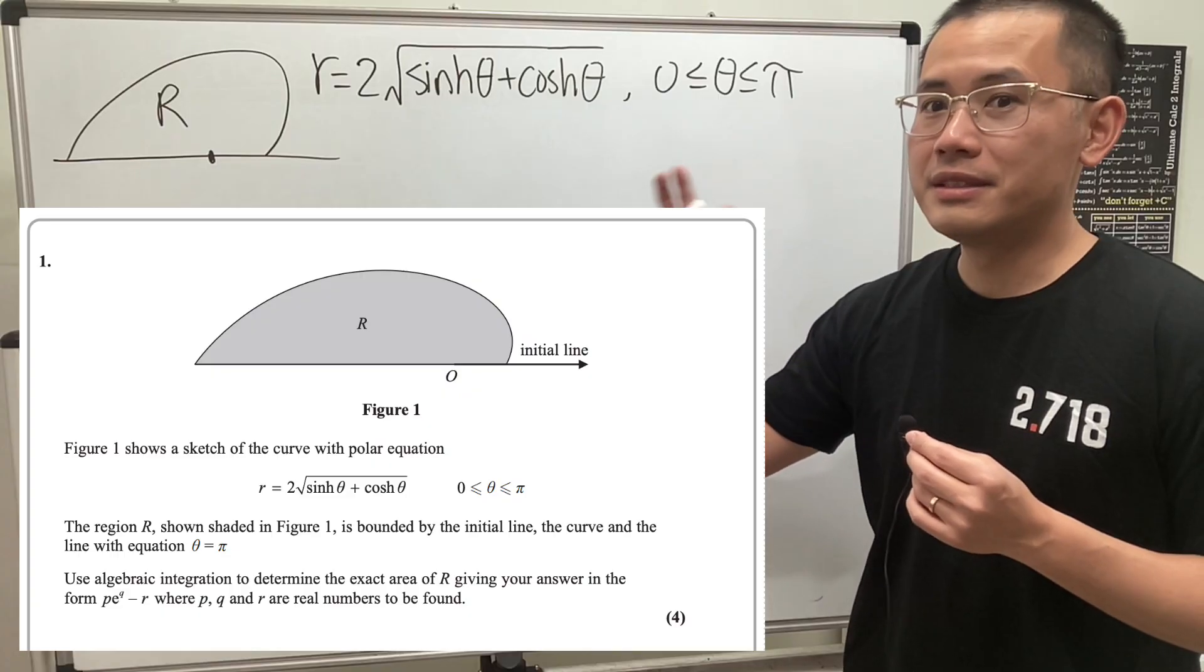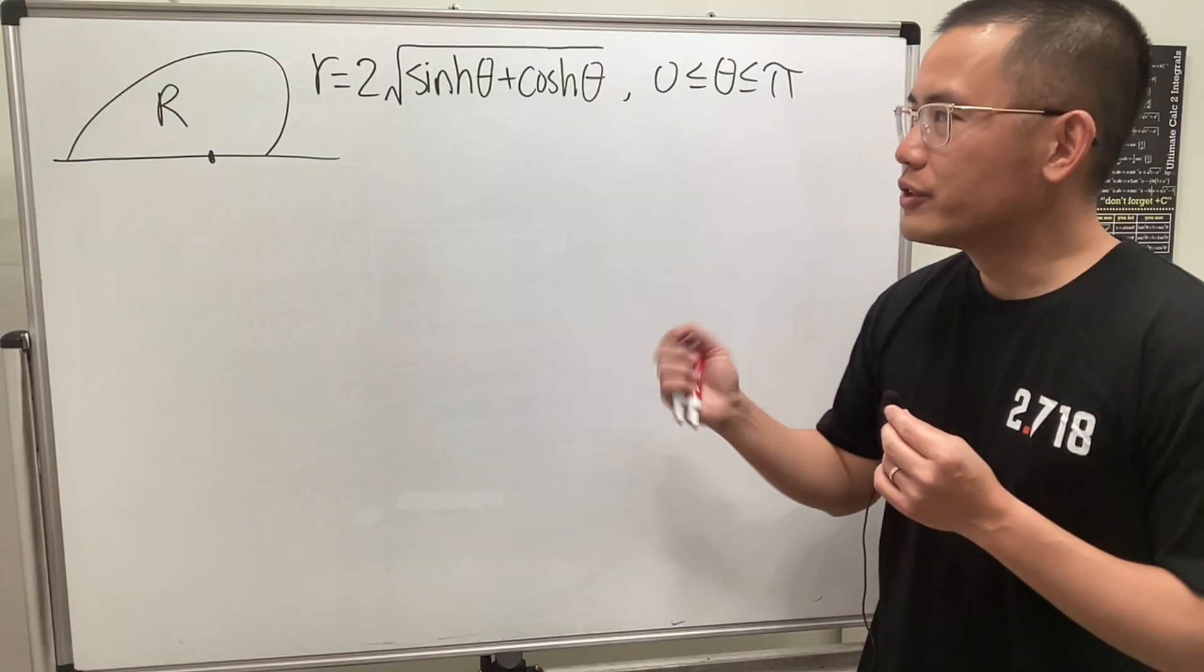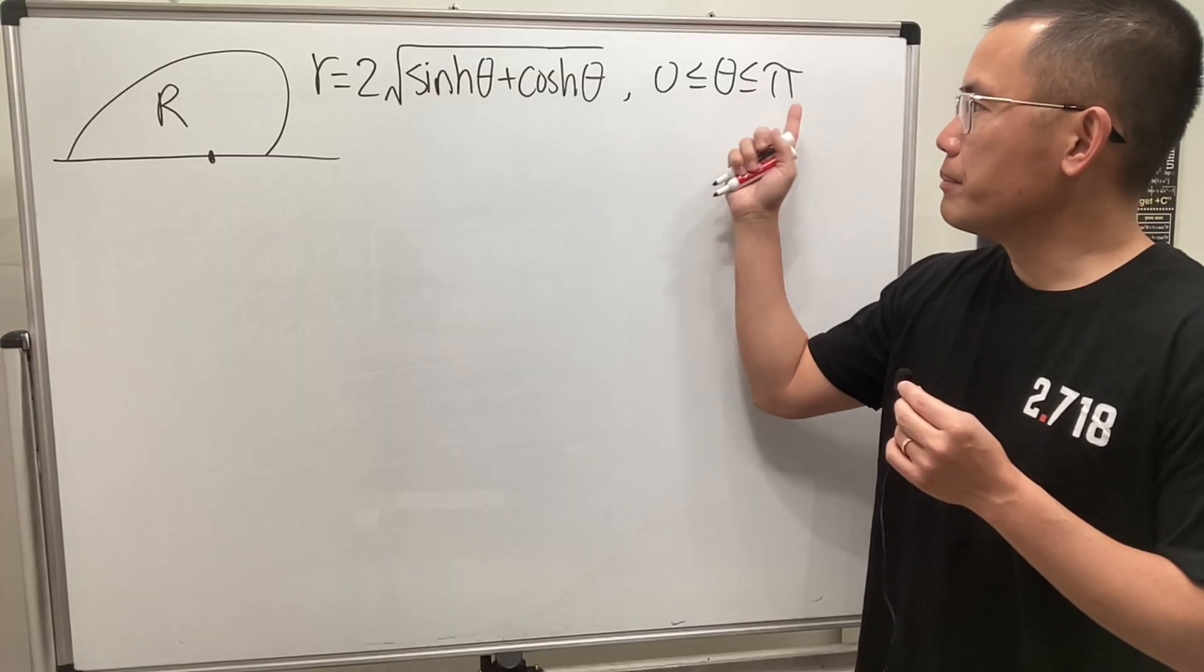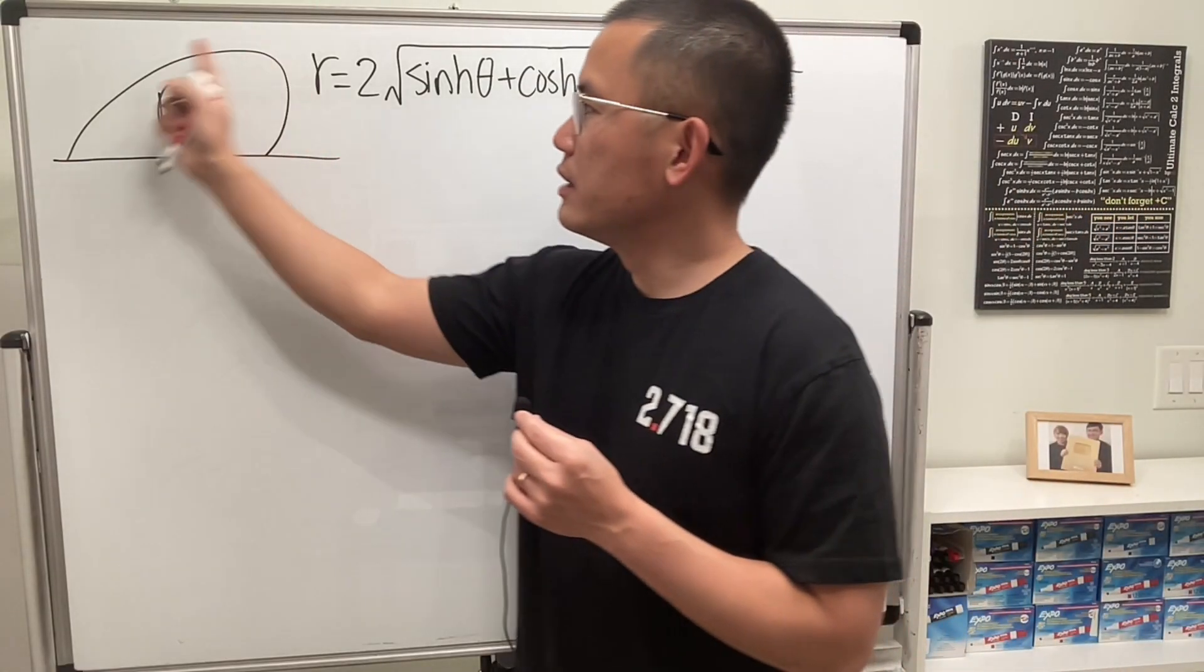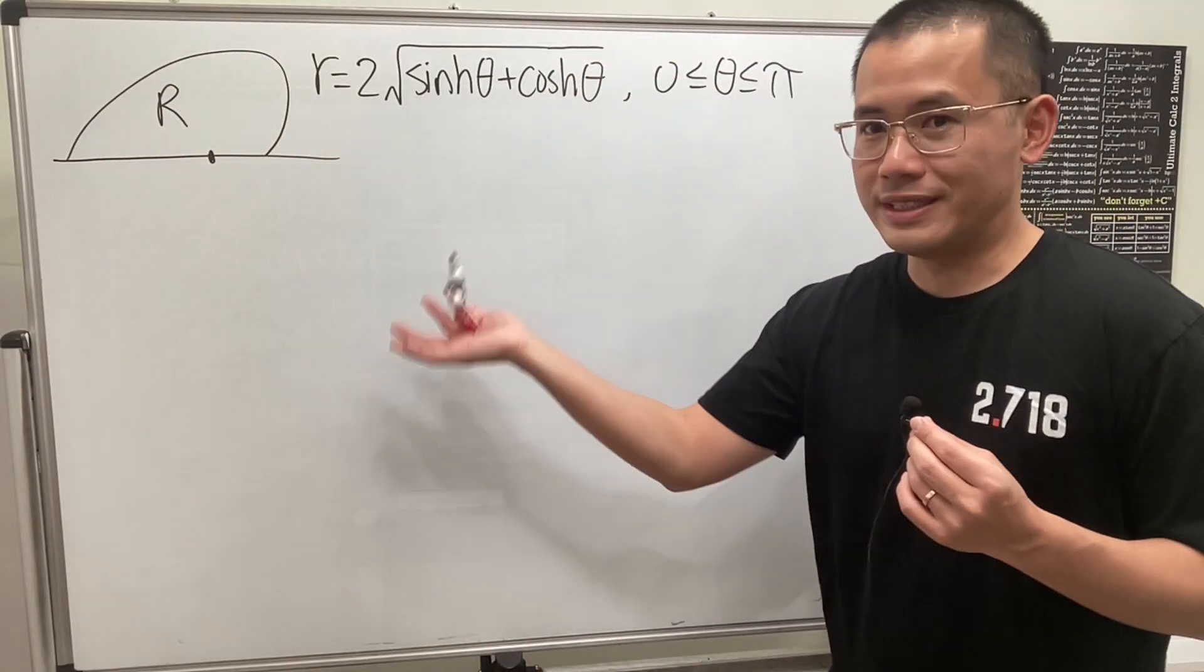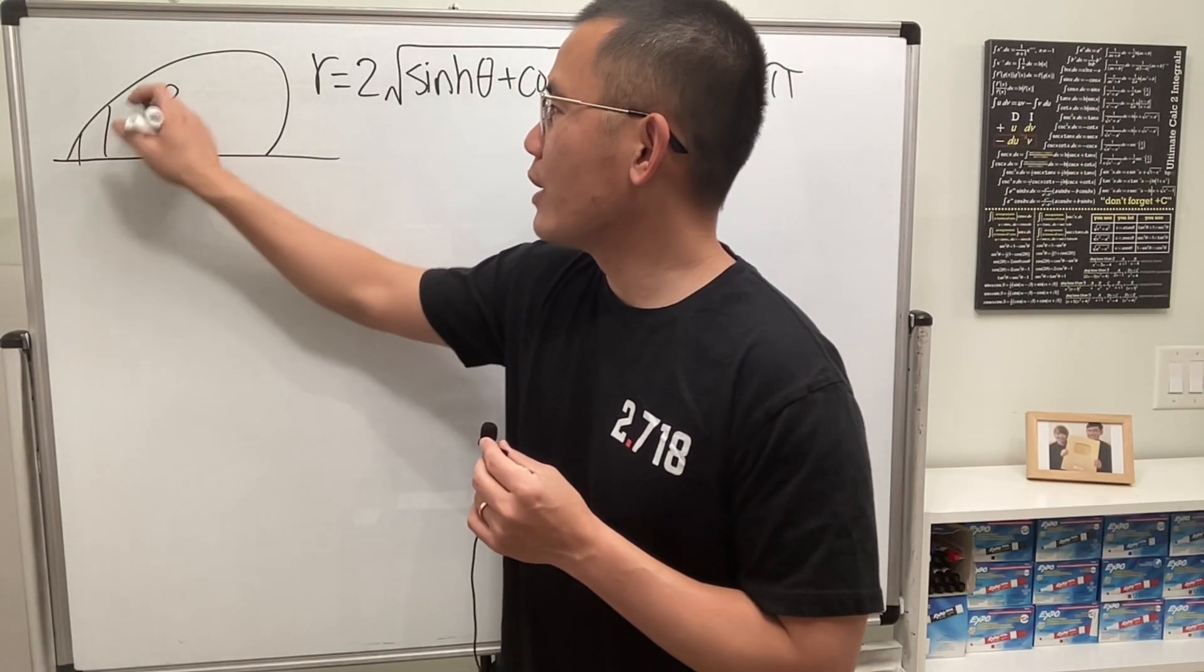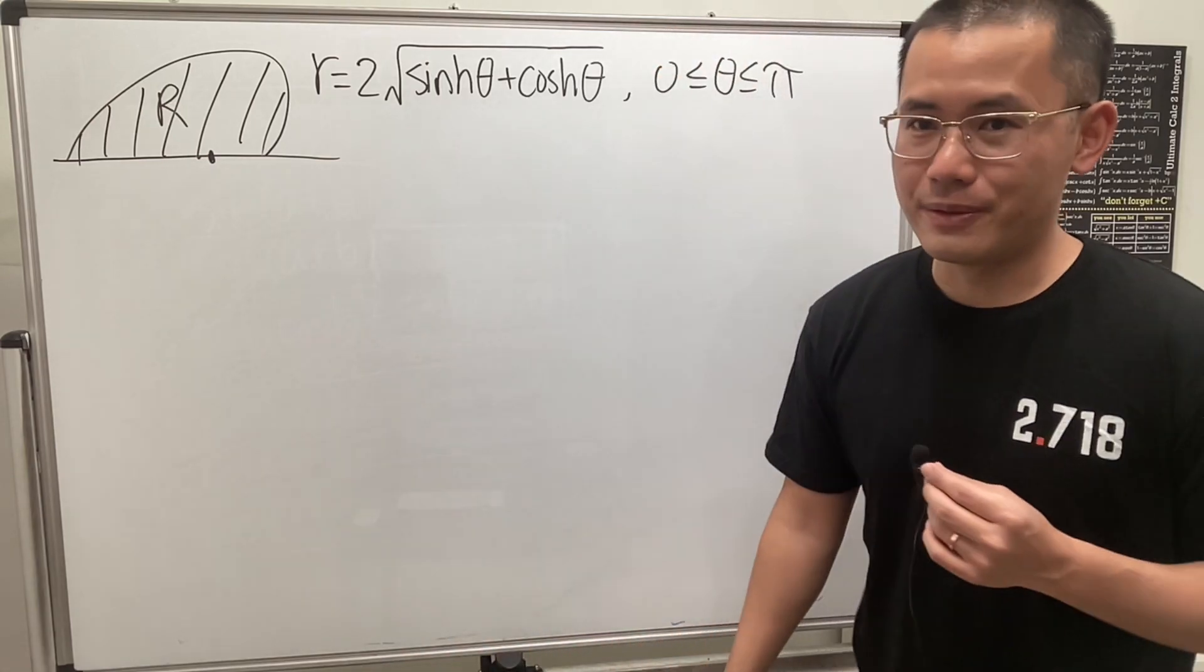And keep in mind, this is a polar curve. So if you graph this in the polar mode, in between 0 and pi for theta, you will get this region here, which was actually given on the test, which is not so bad. And the goal is to find out the area of this right here.